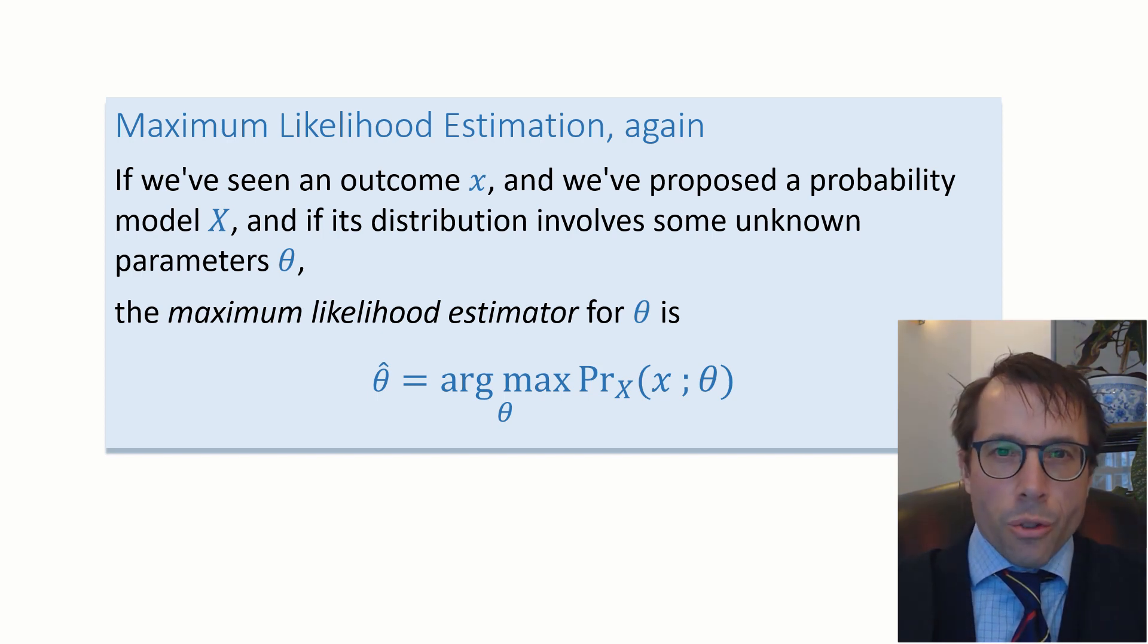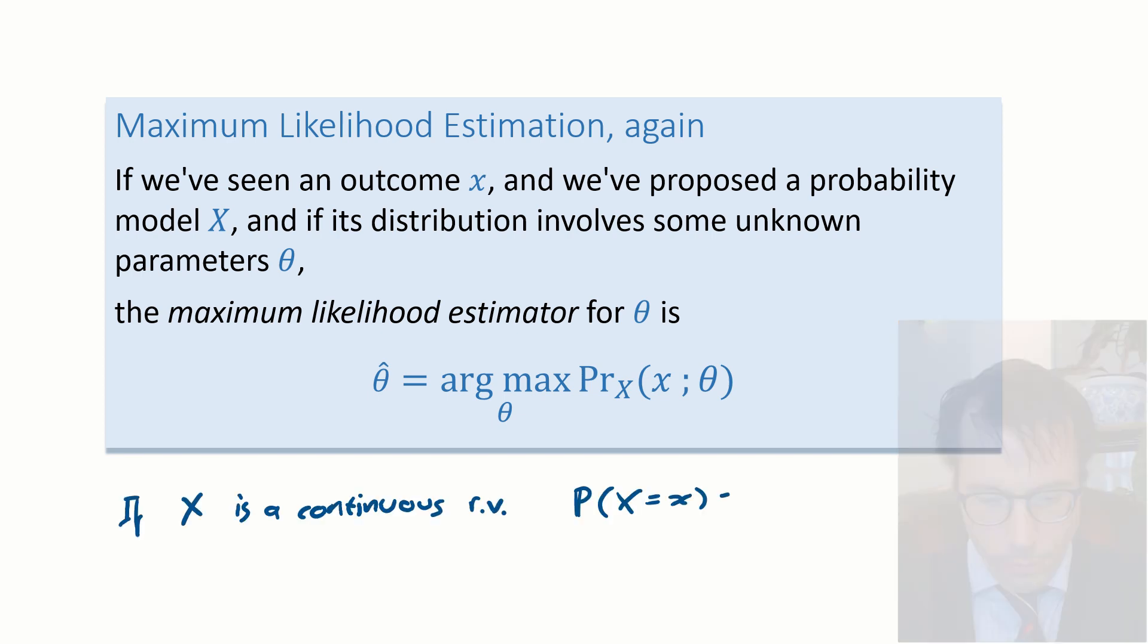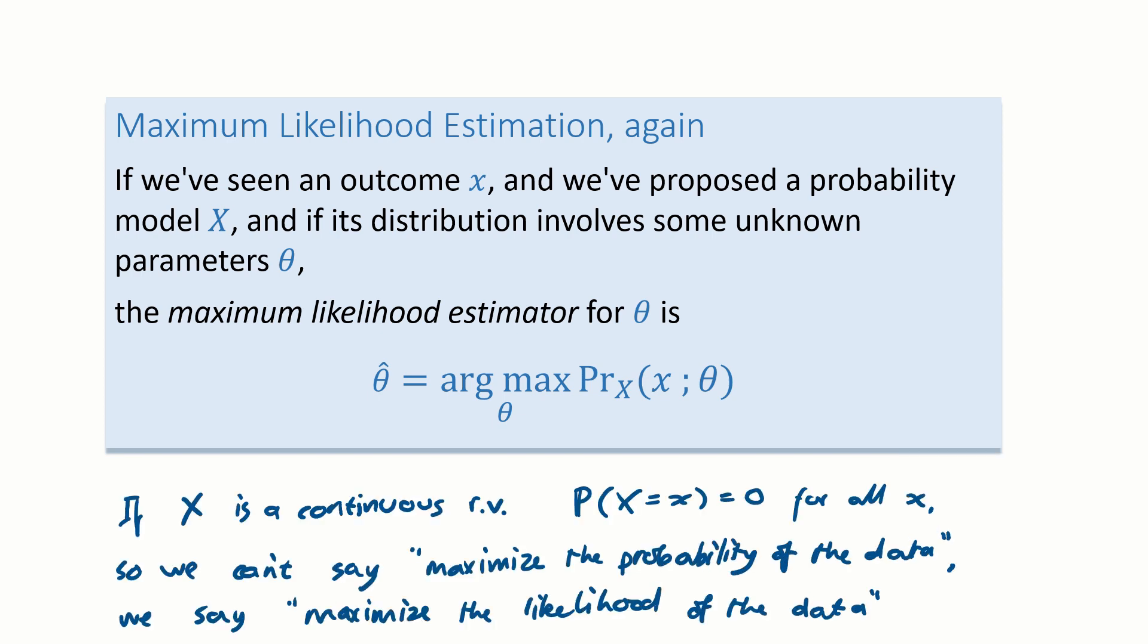At the beginning of this course when we introduced maximum likelihood estimation, we said maximize the probability of the data. But that's not a very good way to put it. The trouble is, if x is a continuous random variable, then the probability it takes any specific value is always equal to zero. So that definition was no good. That's why we prefer to say maximize the likelihood of the data, rather than saying maximize the probability of the data.